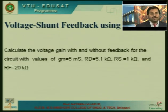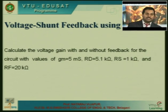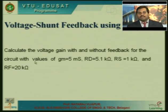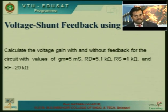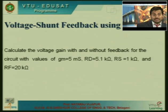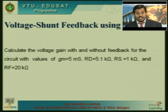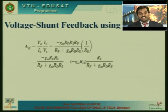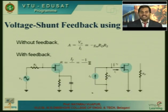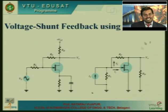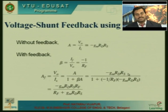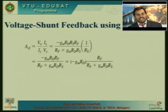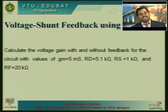Practice problem for voltage shunt FET feedback: calculate the voltage gain with and without feedback for the circuit given — transconductance Gm = 5 mS, Rd = 5.1 kΩ, Rs = 1 kΩ, and feedback resistance Rf = 20 kΩ. Draw the small-signal AC equivalent circuit, then calculate A, beta, Af, and Avf by substituting the given values.